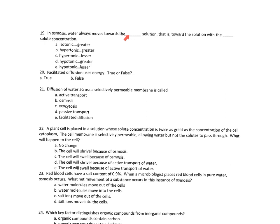In osmosis, water always moves towards which solution? Water always moves towards the hypertonic of the two solutions. Which means greater solute concentration. So the answer is B — hypertonic and greater. Hypertonic solution, greater solute concentration. Maybe you didn't understand that but hopefully now you got it.